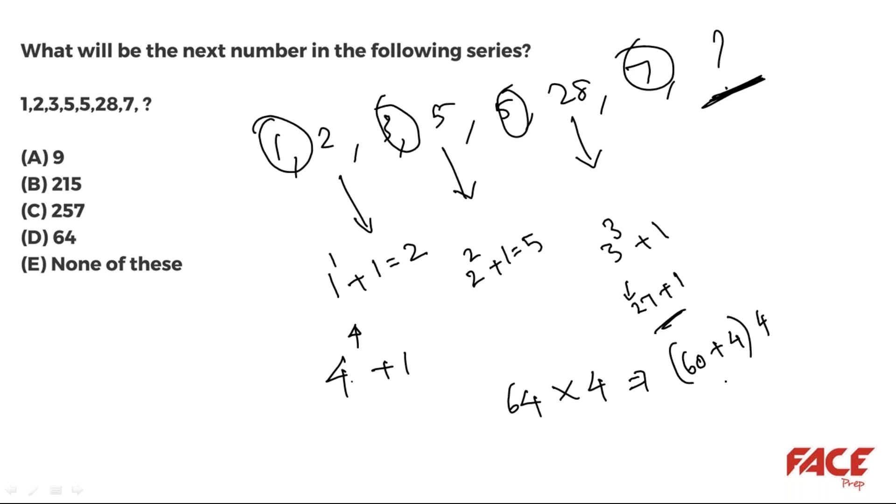Sixty-four times four. If you don't know how to calculate it quickly, just write it like this: sixty plus four, times four. Sixty times four is two forty, four times four is sixteen, so sixty-four times four is two fifty-six, and two fifty-six plus one is the answer, which is two fifty-seven.